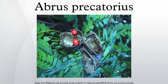Toxin: The toxin abrin is a dimer consisting of two protein subunits, termed A and B. The B chain facilitates abrin's entry into a cell by bonding to certain transport proteins on cell membranes, which then transport the toxin into the cell. Once inside the cell, the A chain prevents protein synthesis by inactivating the 26S subunit of the ribosome. One molecule of abrin will inactivate up to 1,500 ribosomes per second.